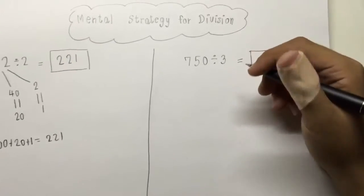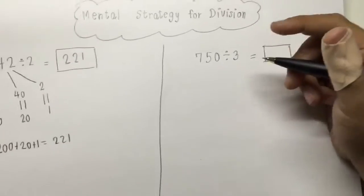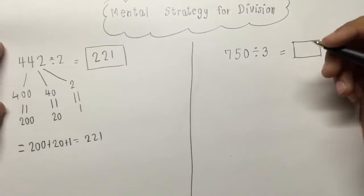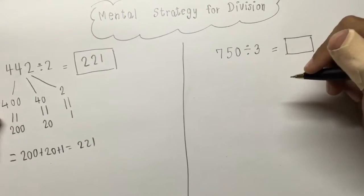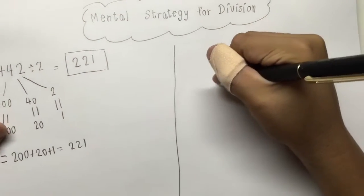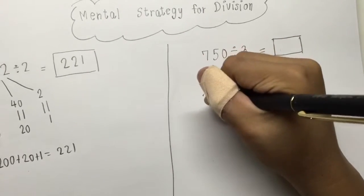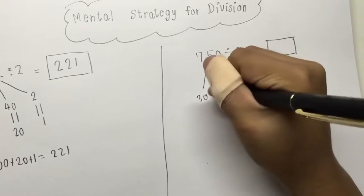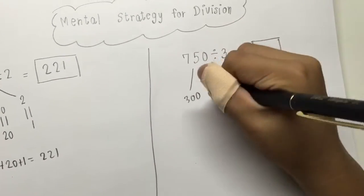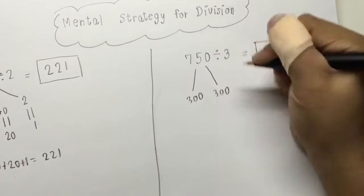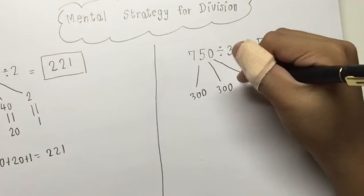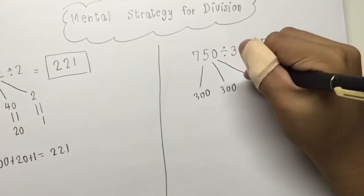The next question is 750 divided by 3. So the first number that I think is 300, the second number that I think is 300, and the last number that I think is 150.